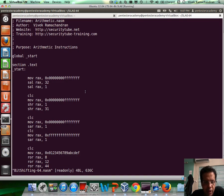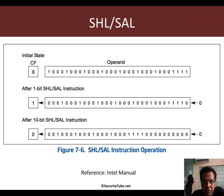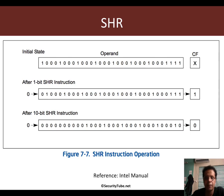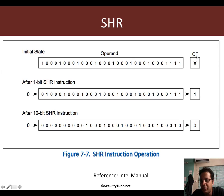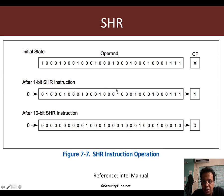Now let's look at the second instruction set, which is shift right. In shift right, the principle is exactly the same, but you have to visualize the carry flag on the right-hand side. The least significant bit, if we do a 1-bit shift right, would be replicated inside the carry flag, while 0 would be inserted on the most significant bit side.